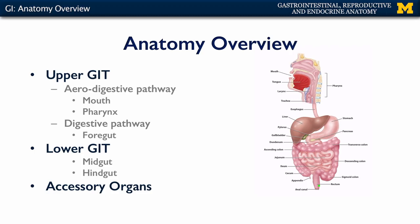One very easy way is that there are upper and lower portions to the pathway, with a junction between them. The mouth, the oral cavity, the esophagus, the stomach, and the first two parts of the duodenum would be the upper GI. Whereas the lower GI would be the second two parts of the duodenum, the remainder of the small intestines, the large intestine, the sigmoid colon, the rectum, and the anal canal.